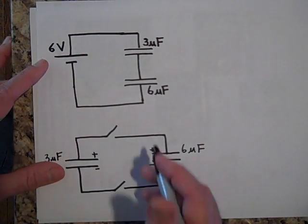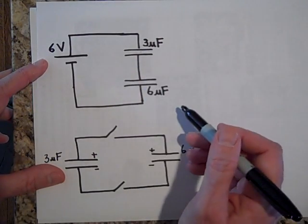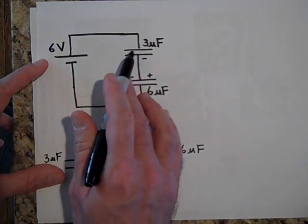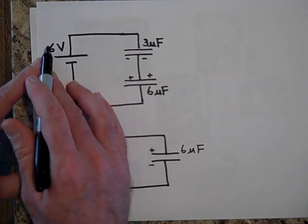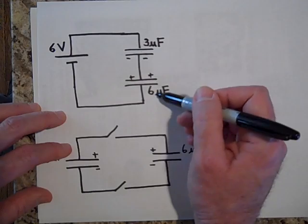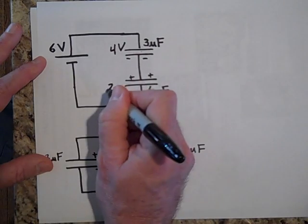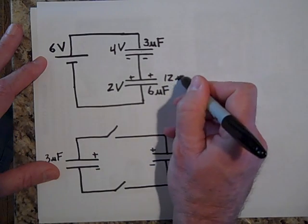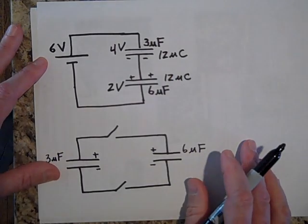Okay, we're back. So this is going to have the same charge as this because they're in series. See these electrons, they came from here. And so to have the same charge, this is going to need twice as many volts as this. So I'll break this into three parts and give two of them to this and one of those parts to that. So that means that the charge on this one is 12 micro coulombs and the charge on this one is 12 micro coulombs.